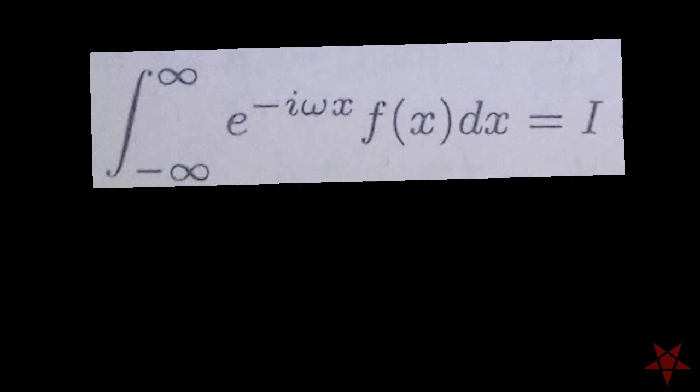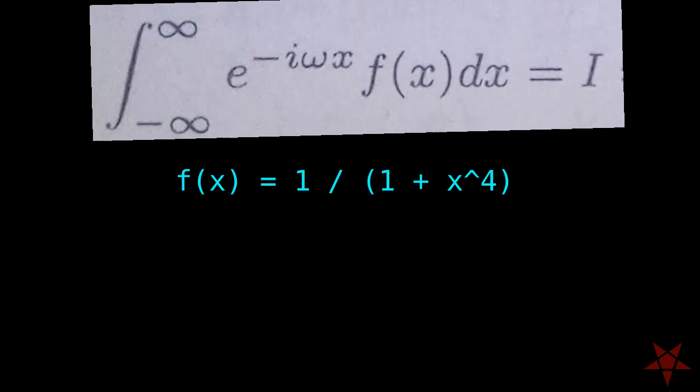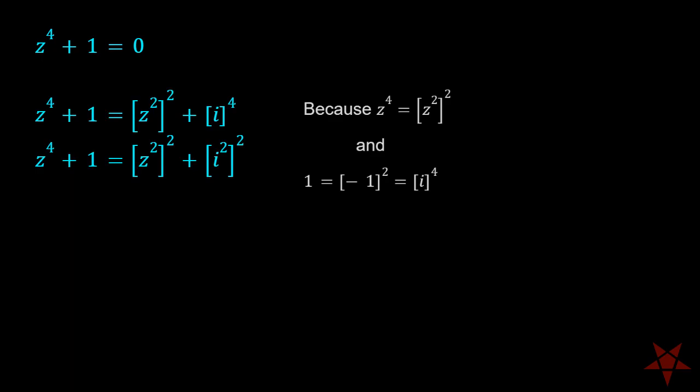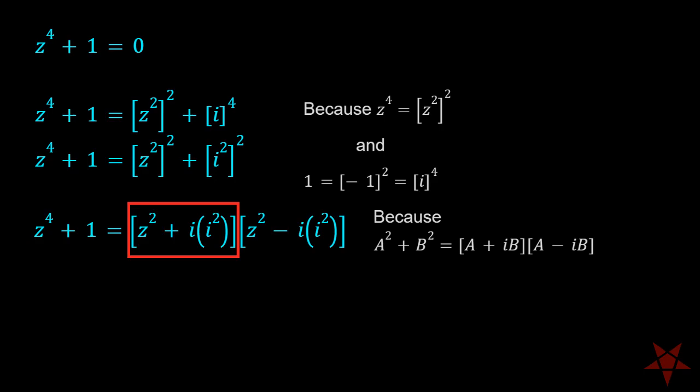The only singularities in the integrand are those in the function f of z, which for our purposes is 1 over 1 plus z to the 4th, and setting the denominator of f equal to 0 gives us the locations of those singularities. If you manipulate the one on the right by recognizing that 1 equals i to the 4th, then we can show that z to the 4th plus 1 can be rewritten as z squared plus i times i squared, times z squared minus i times i squared. This expression simplifies into z squared minus i times z squared plus i.